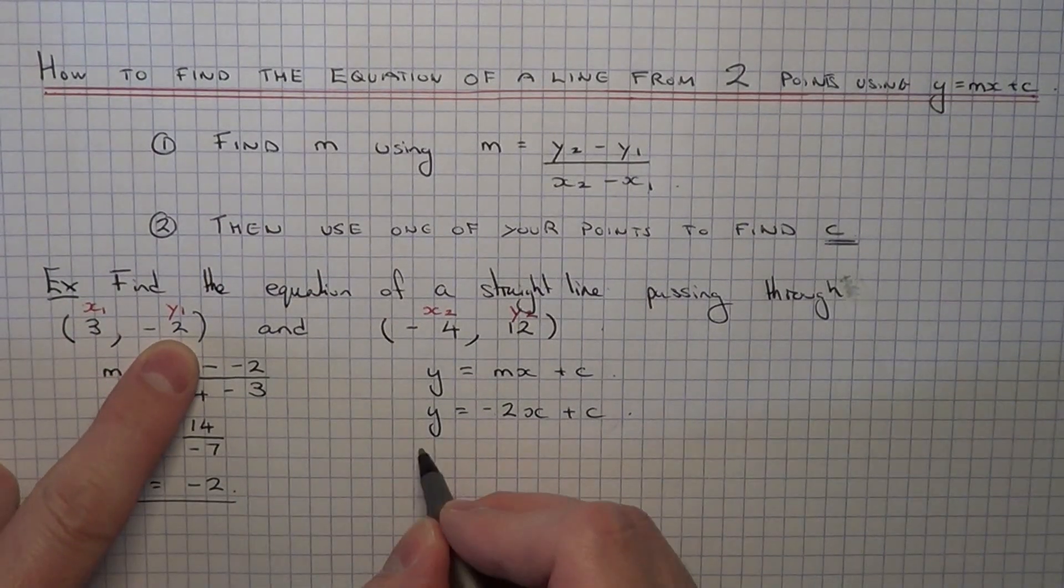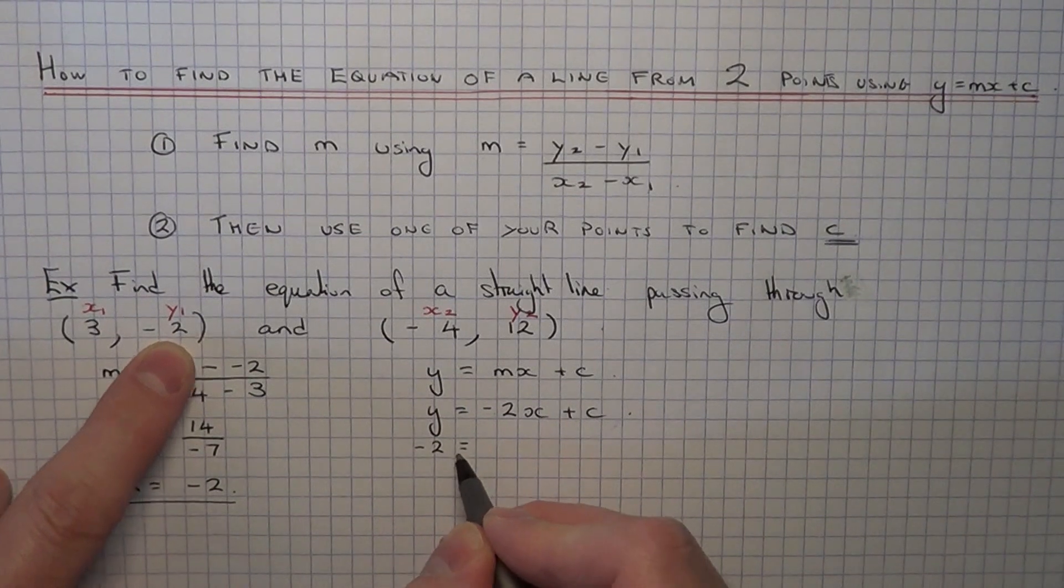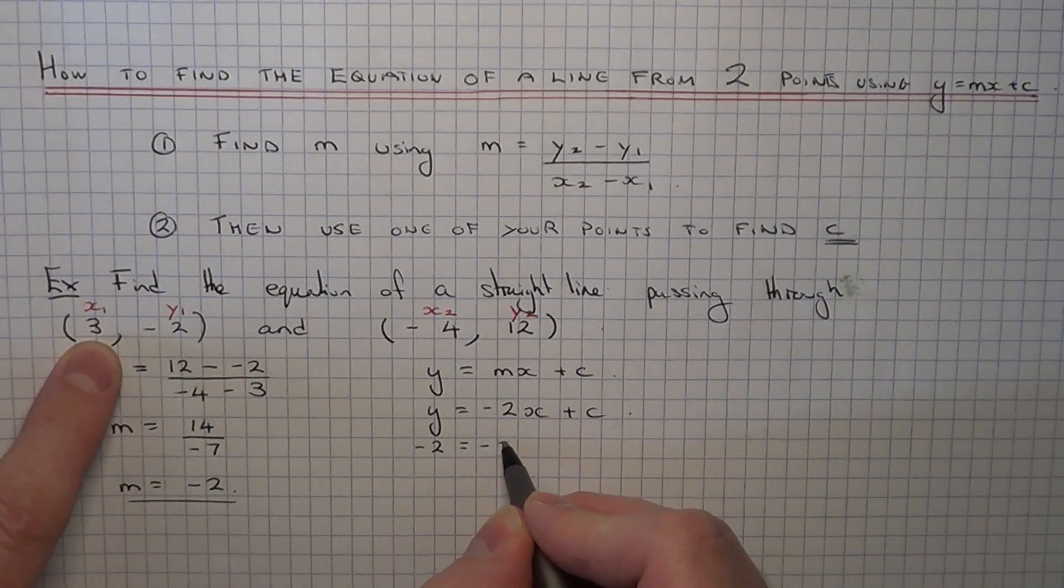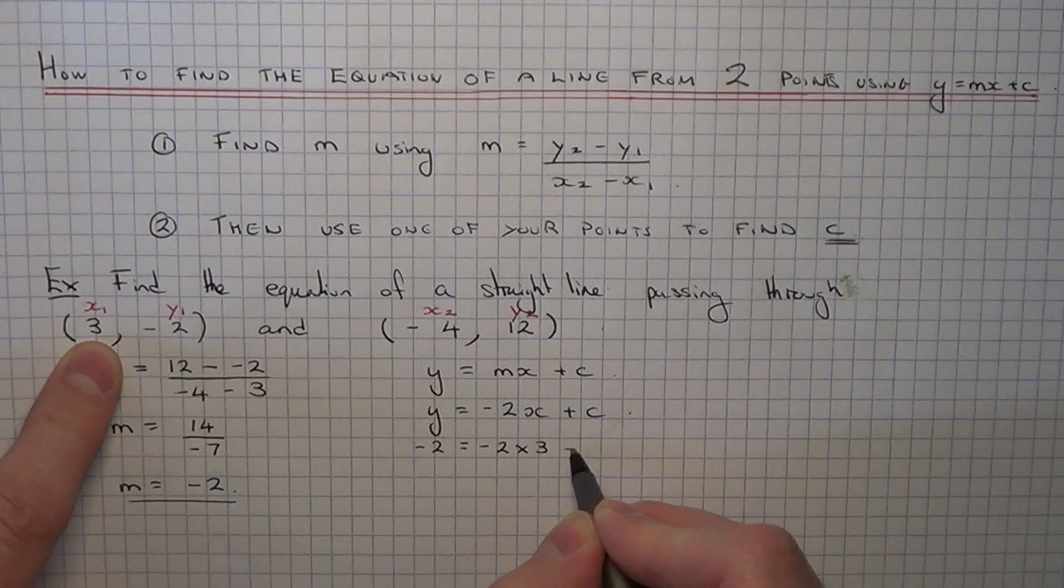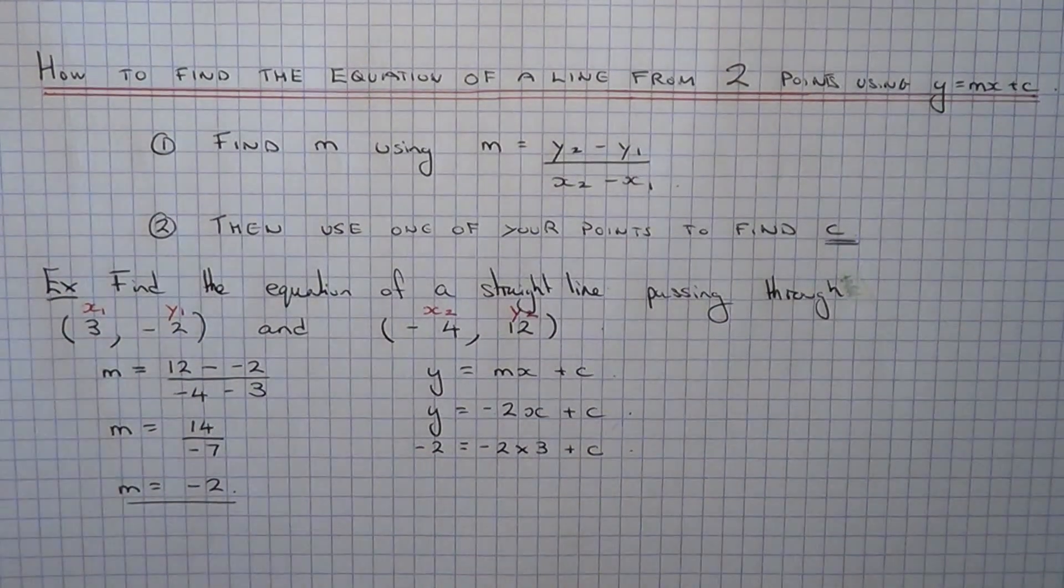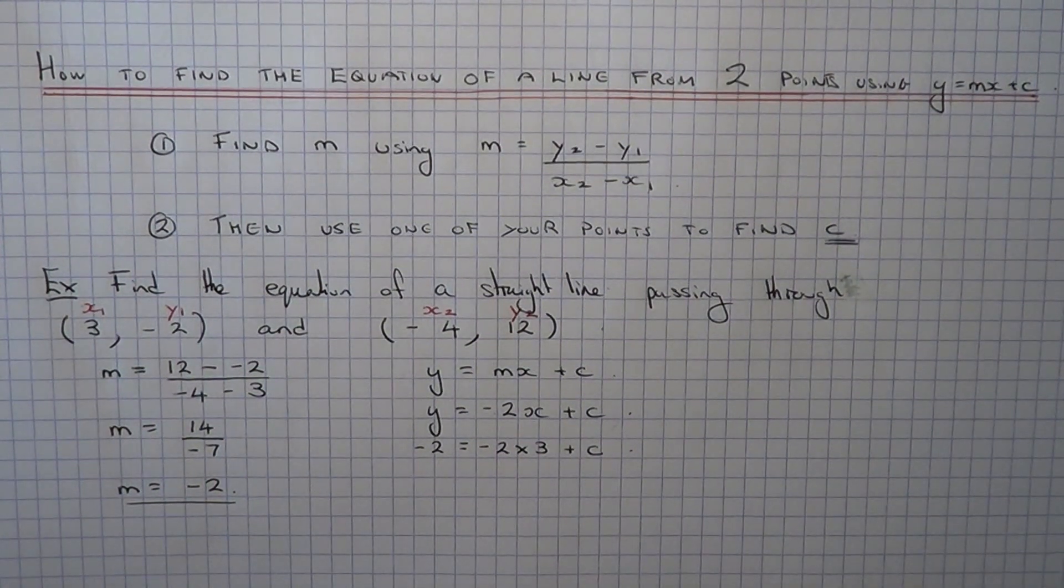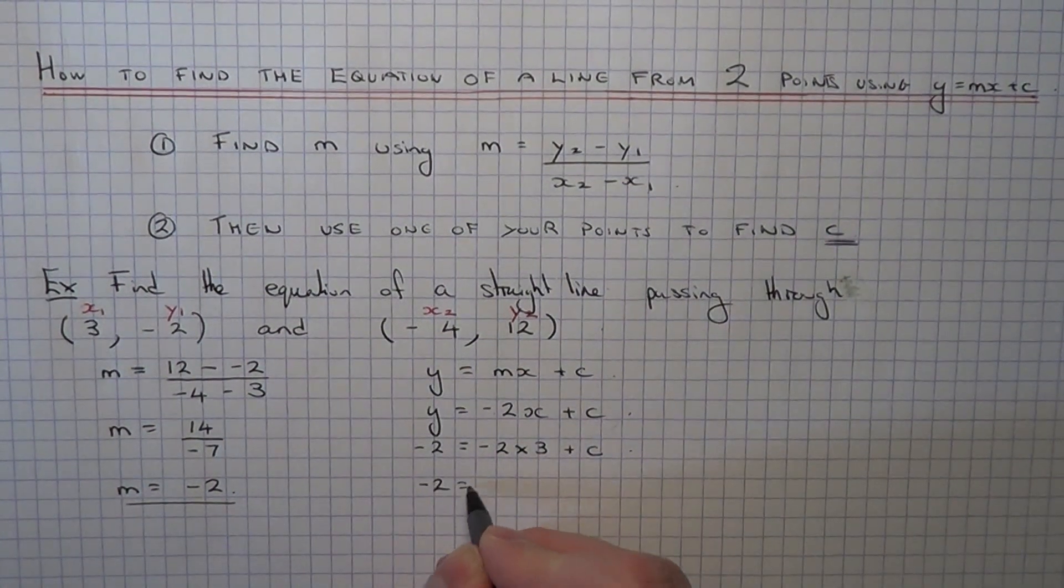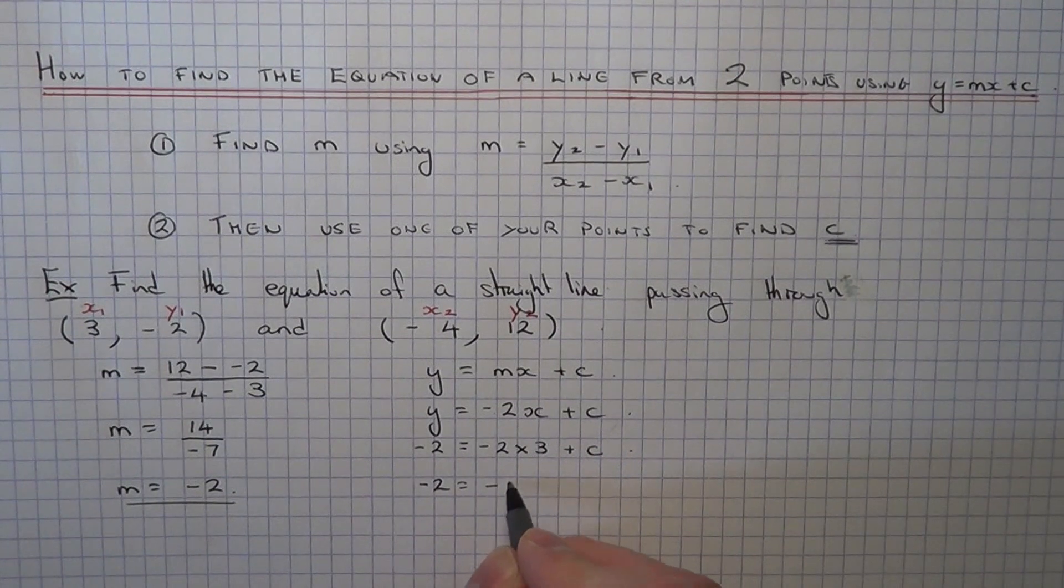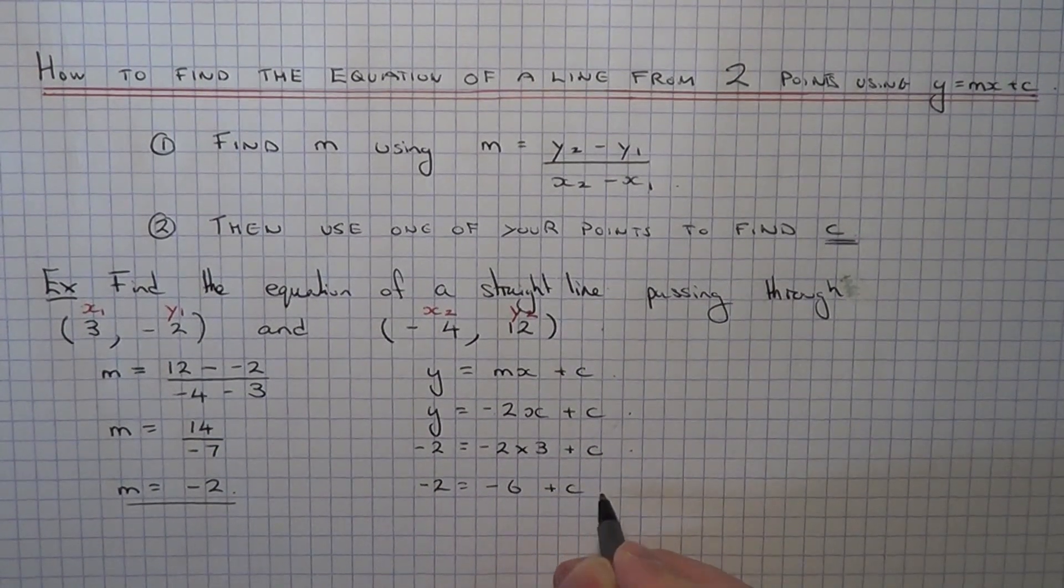So y is minus 2 and x is 3. So I've just substituted these points in for x and y. Make sure you get them the right way around. So minus 2 times 3 is minus 6 plus c.